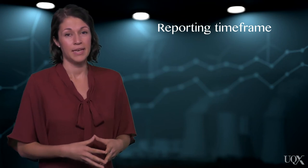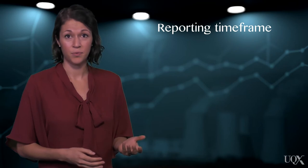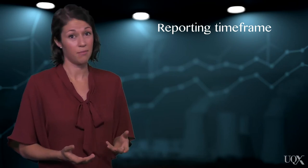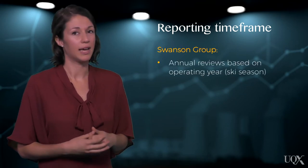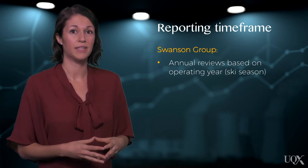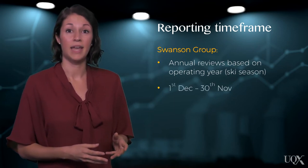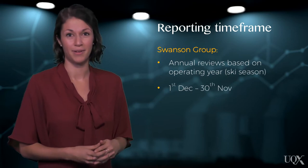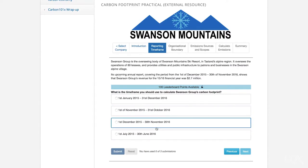Our first step in the carbon footprint process is to decide the most appropriate reporting timeframe. This is commonly either a calendar year or a financial year, but it can be something completely different. For example, Swanson Group, like many other alpine resort businesses, conducts all annual reviews based on their operating year, which runs from the beginning of the ski season on the 1st of December and ends on the 30th of November. So, which reporting period should Swanson Group choose?